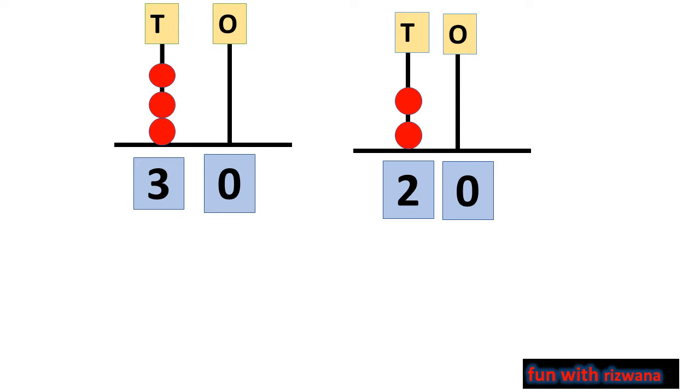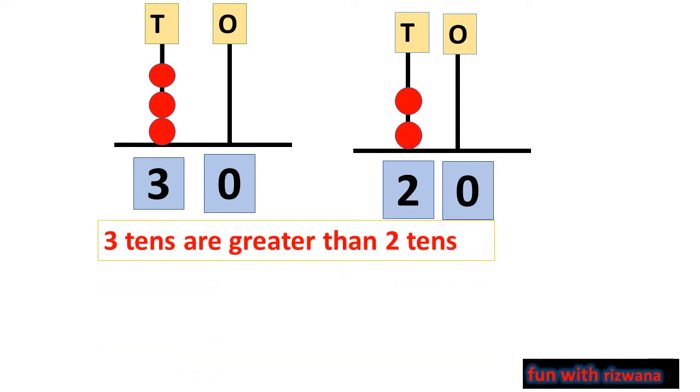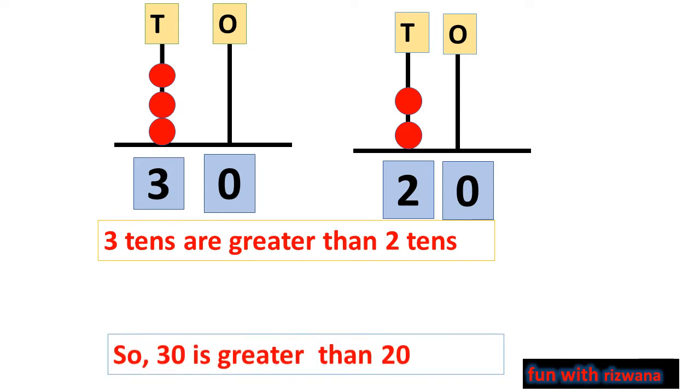In two digit numbers, we must have to compare tens first. In these two numbers, we have 3 tens and 2 tens. So, it means 3 tens are greater than 2 tens.